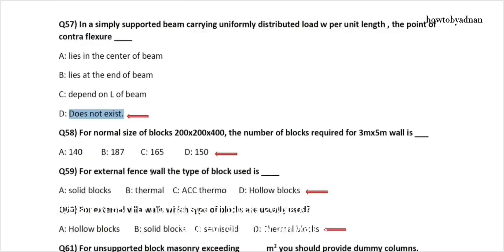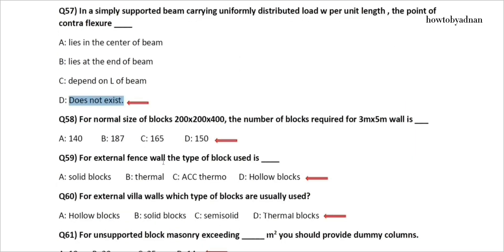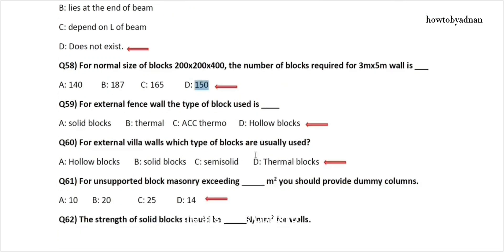Question 57: In a simply supported beam carrying uniformly distributed load W per unit length, the point of contraflexure? The answer is option D: Does not exist. Question 58: For normal size of blocks 200×200×400 mm, the number of blocks required for a 3 meters by 5 meters wall is? The answer is option D: 150. Question 59: For an external fence wall, the type of block used is? The answer is option D: Hollow blocks.